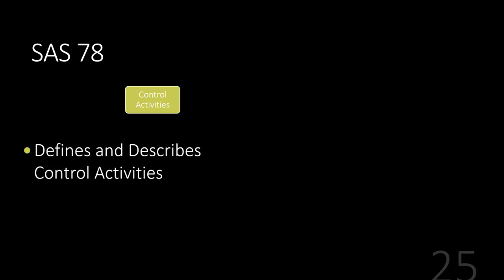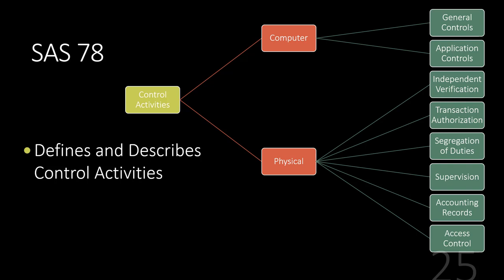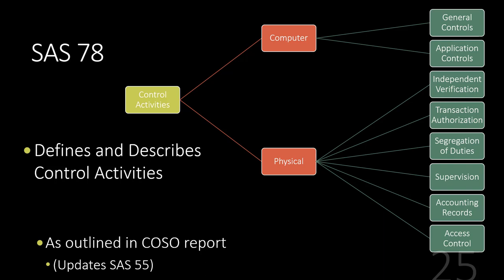SAS 78 describes the control activities and lays them out much as we've discussed. We have computer controls and physical controls. Within computer controls, we have general controls and application controls. On the physical side, there are many ways of performing physical controls. Segregation of duties comes up frequently, and when it can't be achieved due to budgetary constraints, supervision would be a compensatory control. Keeping accounting records and a good audit trail, along with authorization, verification, and access control, are also key. SAS 78 more or less mirrors the COSO report and is an update to SAS 55.